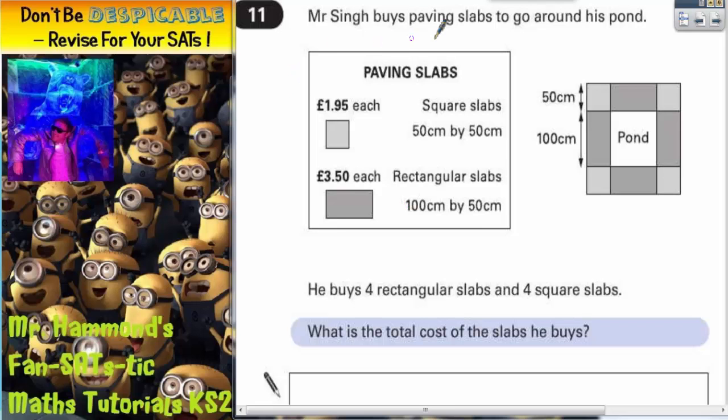Question 11. Mr Singh buys paving slabs to go around his pond, and there's his pond. We've got two types of paving slabs. We've got square ones, which are £1.95 each, and they are light grey in the corners. And we've got rectangular slabs, which are £3.50 each, and they're the ones that are dark grey in the middle of each side.